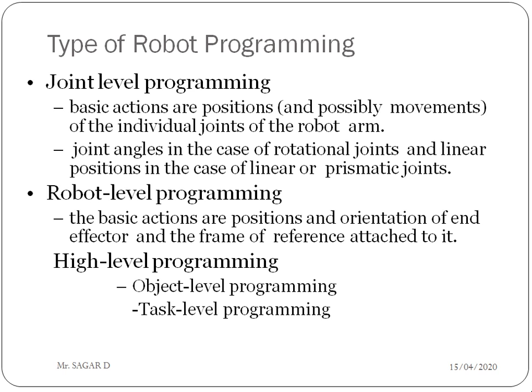The second type is robot level programming. In this, the basic actions are positions and orientations of the end effector. It is related to the positions and orientation of the end effector and the frame of reference attached to that end effector.